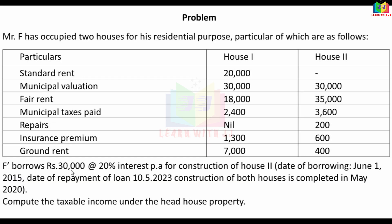Mr. F borrows Rs. 30,000 at 20% per annum for construction of house 2. Date of borrowing is June 1, 2015. Date of repayment of loan is May 10, 2023. Construction of both houses is completed in May 2020. This loan is for construction of house 2.